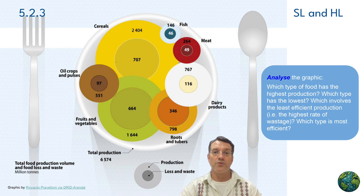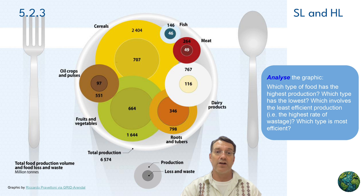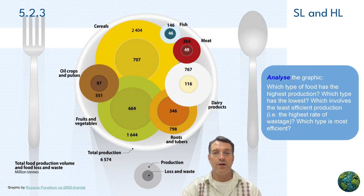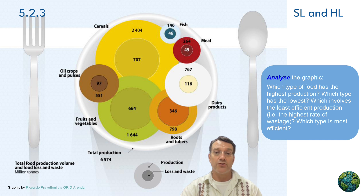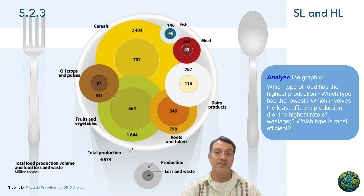This circular diagram shows global food production by category. Cereals represent the largest portion of production, followed by fruits and vegetables, then roots and tubers. But here's what's really interesting: if you look at the efficiency of production — meaning how much food actually reaches consumers versus how much is wasted — different food types show very different patterns. Some crops have much higher waste rates than others, and that affects the real efficiency of the entire food system.